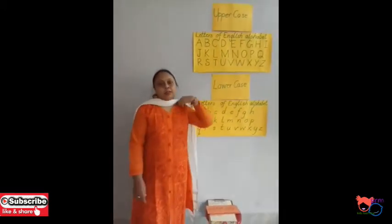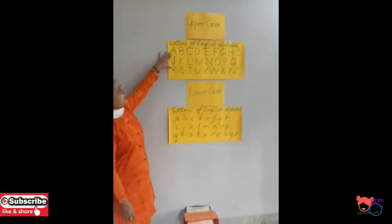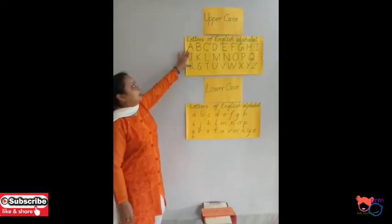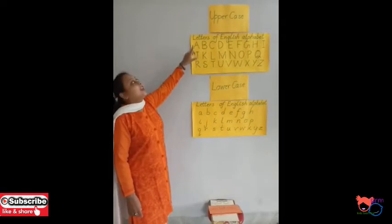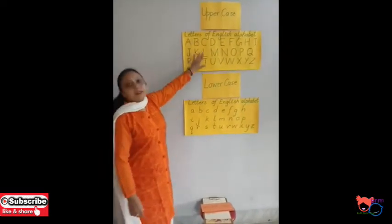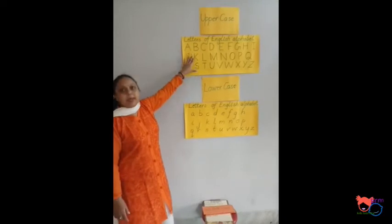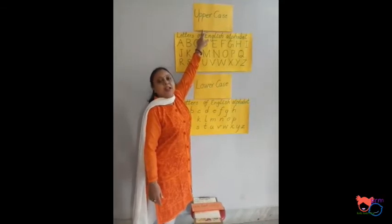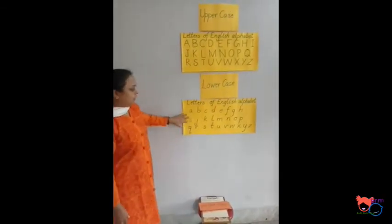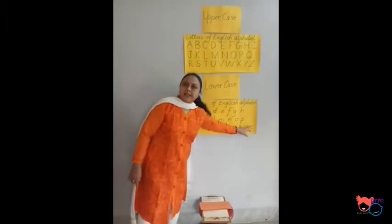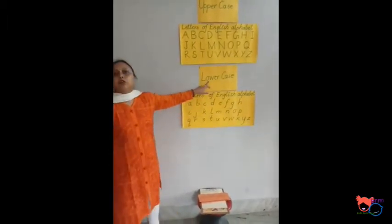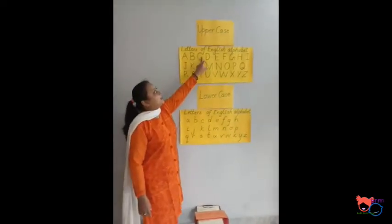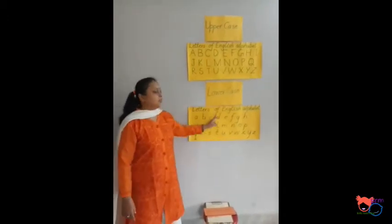Let me show you something first. Here you can see I have written A to Z. This you have been learning since LKG, yes or no? So this A to Z, the way it is written — you call it capital letters. It's also known as uppercase letters. The same way, here I have written A to Z in lowercase letters. And here I have written the letters of the English alphabet.